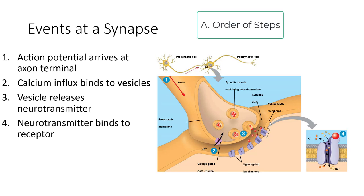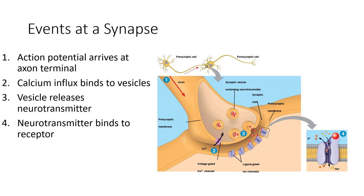An action potential will arrive at the axon terminal, having traveled down from the presynaptic cell all the way to the end of the axon. There will then be a calcium influx causing binding of calcium to vesicles full of neurotransmitters. These vesicles will bind to the membrane of the axon and release the neurotransmitters into the synaptic cleft.